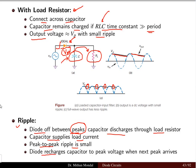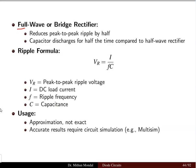The diode recharges the capacitor to the peak voltage when the next peak arrives. In one half cycle there is one peak where the diode turns off and the capacitor takes action; in the next half cycle the other peak recharges the capacitor again. We have two types of full wave rectifier: center-tapped and bridge rectifier. The full wave rectifier reduces the peak-to-peak ripple by half compared to the half wave rectifier, and the capacitor discharges for only half the time.